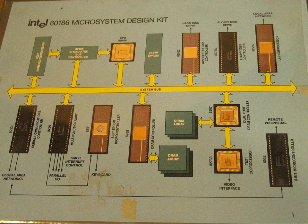RAM: 256 bytes expandable to 512 bytes with another 8155 RAM, with 22 programmable I/O lines. The 14-bit programmable timer/counter was used for system single-step control; the expansion timer/counter was available. ROM: 2 KB expandable to 4 KB with another 8755 EPROM, with 16 programmable I/O lines in the expansion socket. Size and weight: 30.5 × 25.7 × 1.3 cm. Documentation: User's manual.